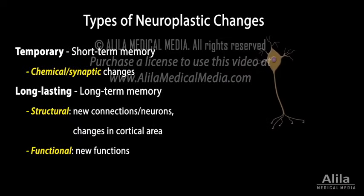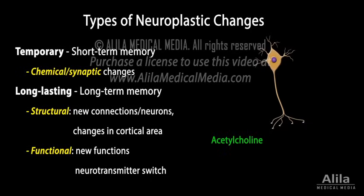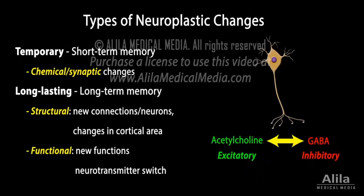Some stimuli, such as stress or physical exercise, can cause certain neurons to switch from one neurotransmitter to another, often converting them from excitatory to inhibitory or vice versa. This neurotransmitter switching is thought to be the basis of behavioral changes induced by such stimuli.